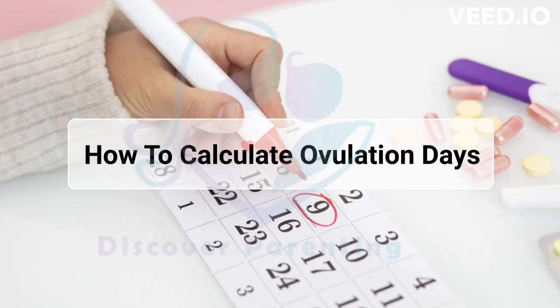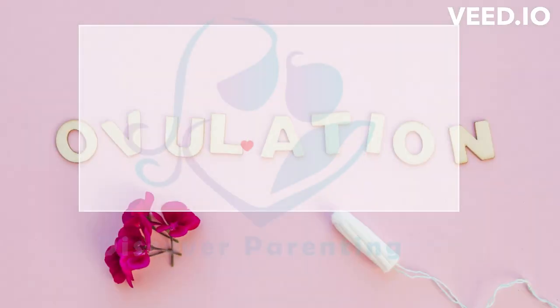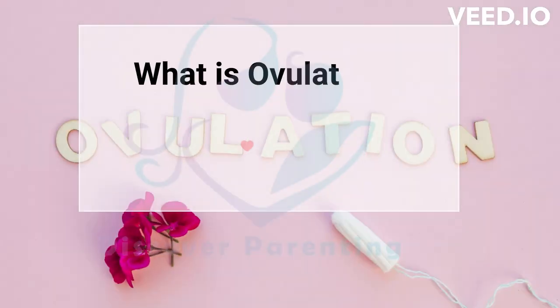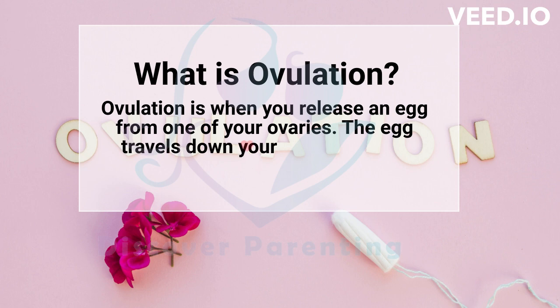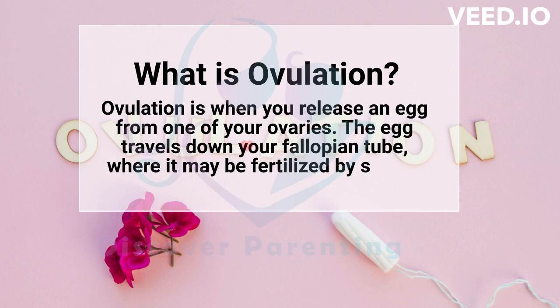How to Calculate Ovulation Days. What is ovulation? Ovulation is when you release an egg from one of your ovaries. The egg travels down your fallopian tube, where it may be fertilized by sperm.